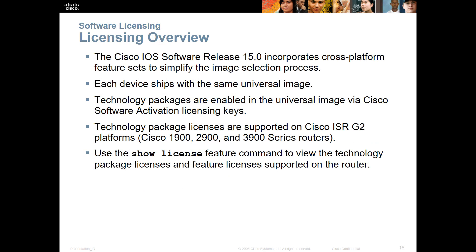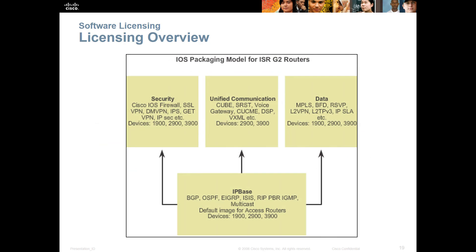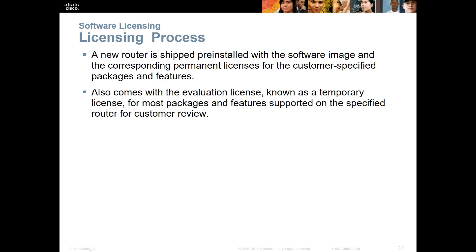Licensing overview: each device ships with the same universal image and the same base license. You can see your licensing with 'show license.' You get IP base, which comes with the device. If you want more, you get the appropriate license. If you buy a router that has a more advanced feature set but you don't have the licensing documentation, you don't have the right license — you cannot use the licensed features unless you have the documentation. A router is shipped with a pre-installed software image that corresponds to a permanent license for the customer's specific package and feature.